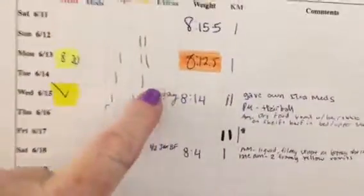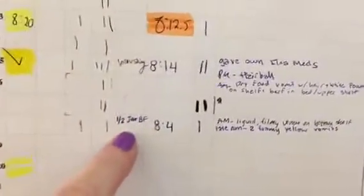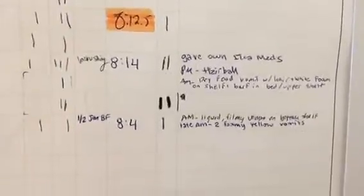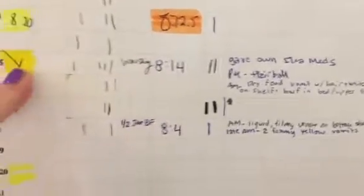So, again, let's see the chart again. 8-14 Wednesday, 8-4 today. And the only odd thing was she got her flea mitts on Wednesday.